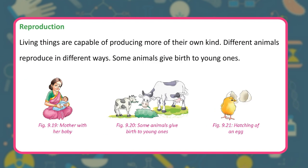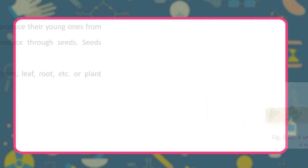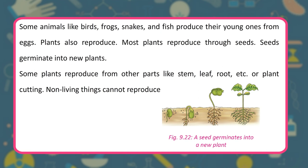Reproduction: living things are capable of producing more of their own kind. Some animals give birth to young ones, while others like birds, frogs, snakes, and fish produce young from eggs. Plants also reproduce — most through seeds, which germinate into new plants. Some plants reproduce from other parts like stem, leaf, root, or plant cuttings. Non-living things cannot reproduce.